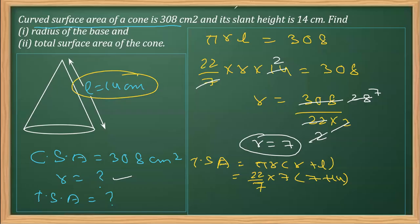Doing the final calculation, 7 and 7 cancel. What's left is 22 × 21, which equals 462 cm². So the radius is 7 cm and the total surface area is 462 cm². This is the final answer.